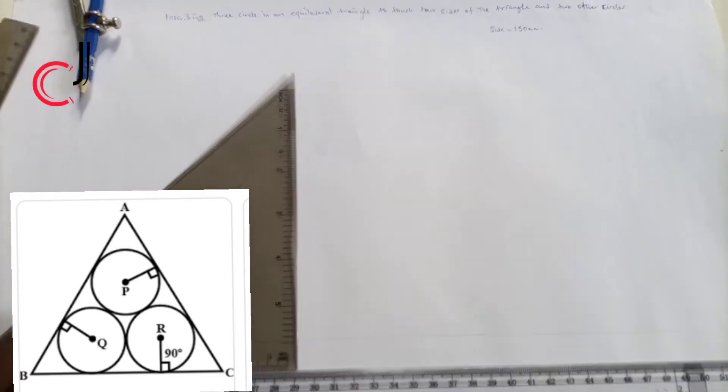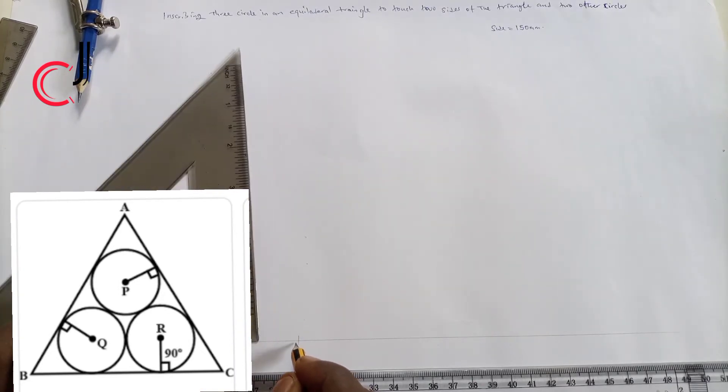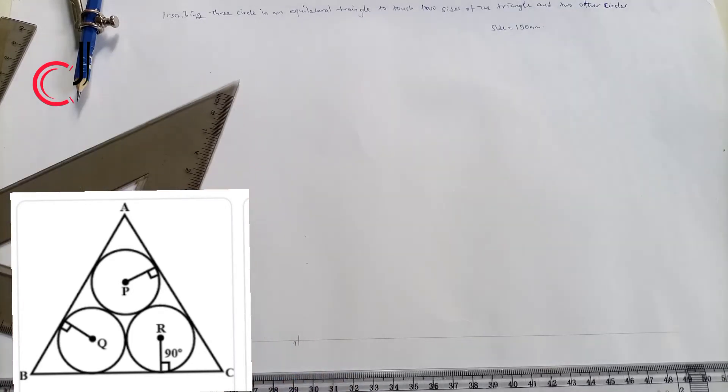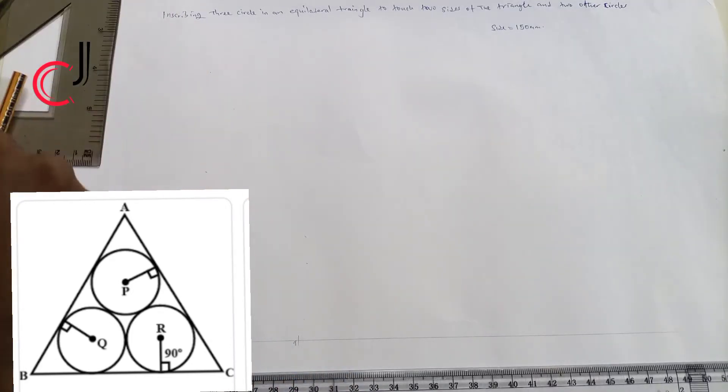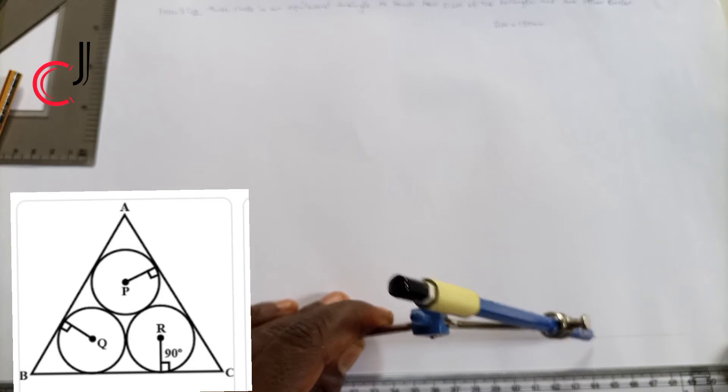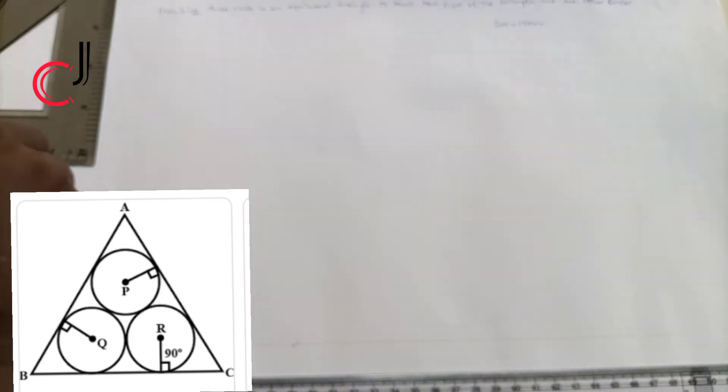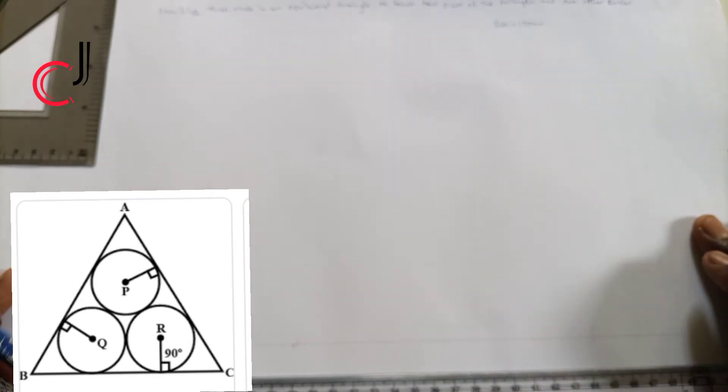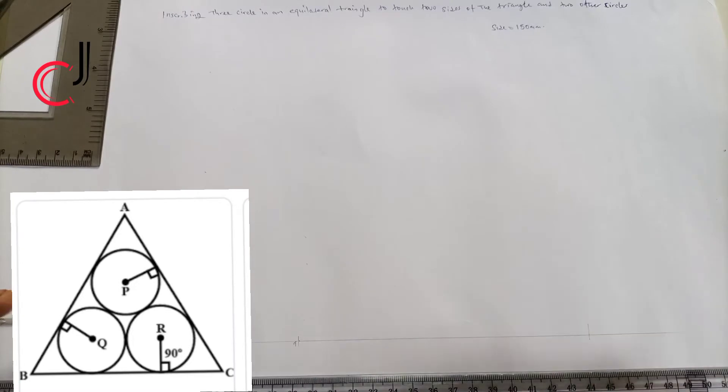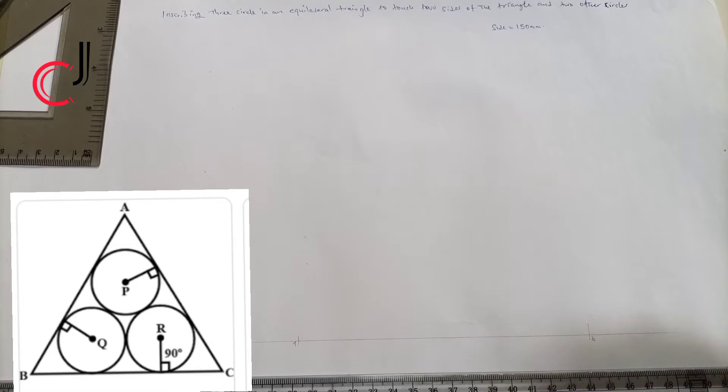Let me call this point here point A. Then we pick our compass and open to point B, which will give us 150 millimeter. Set the compass to 150 millimeter, and at this point here call that point over there as point B.